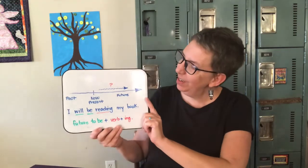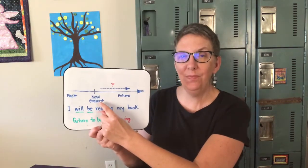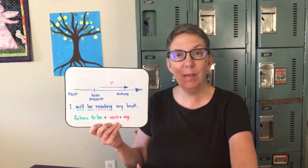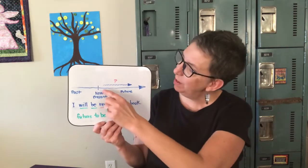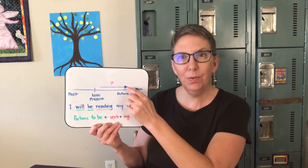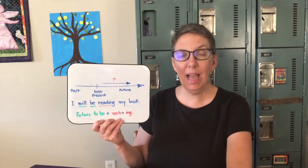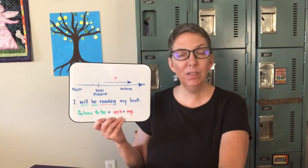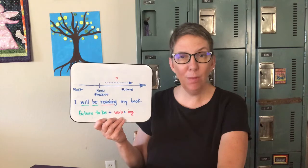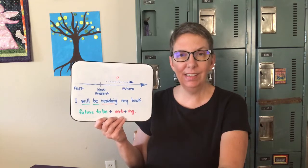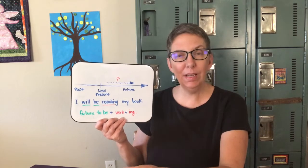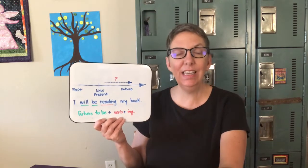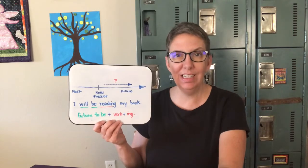So here we have the present moment — now. The future continuous is something that will happen in the future over a period of time. This squiggly arrow represents something happening over a period of time. I put a question mark here because we don't know exactly how much time when we use this tense. We know that it's ongoing, but we don't know for sure when it started or when it ends, unless we give that specific information in the sentence.